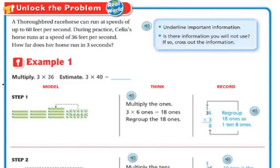Our essential question: how can you use regrouping to multiply a two-digit number by a one-digit number? Let's unlock the problem. A thoroughbred racehorse can run at speeds of up to 60 feet per second. During practice, Cecilia's horse runs at a speed of 36 feet per second. How far does her horse run in three seconds?